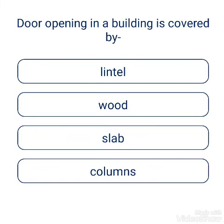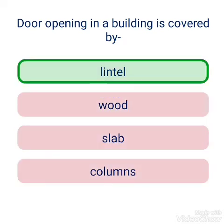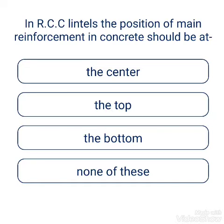Door opening in the building is covered by a lintel. Options: wood, slab, column, lintel — the answer is lintel. In RCC lintels, the position of main reinforcement should be at: the center, the top, the bottom, or none of these.